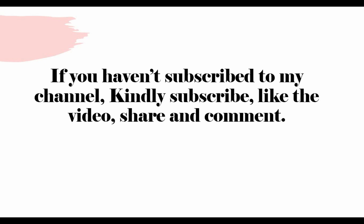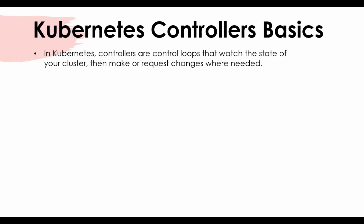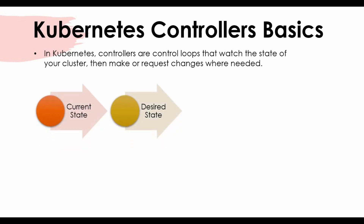Let's get started with Kubernetes controllers basics. In Kubernetes, controllers are control loops. What this loop does is watch for the state of your cluster and make requests for changes as needed. When we talk about a control loop, we need to know two things: the current state and the desired state. Your nodes, pods, and resources in Kubernetes will always have a current state, and you define what the desired state should be in your controller.